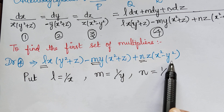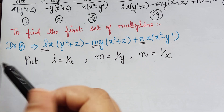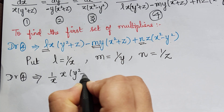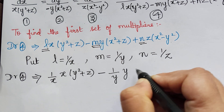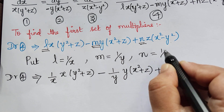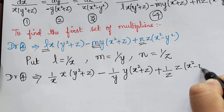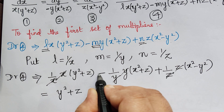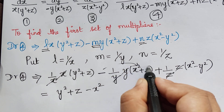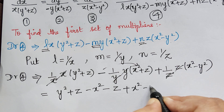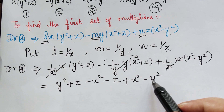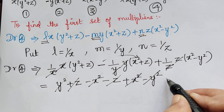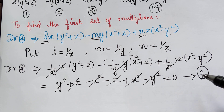Substituting L = 1/x, M = 1/y, N = 1/z into the denominator: (1/x)·x(y² + z) − (1/y)·y(x² + z) + (1/z)·z(x² − y²) simplifies to y² + z − x² − z + x² − y², where y² and −y² cancel, z and −z cancel, and −x² and +x² cancel, giving zero. We mark this as subdivision 1.